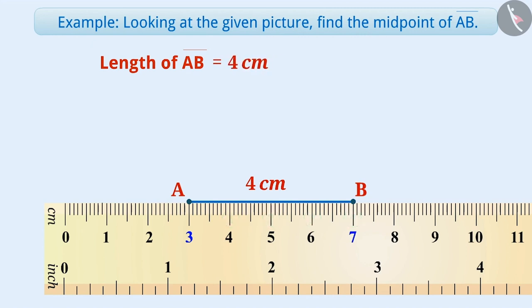This could be done in another way too. Here, point B is at 7 cm and point A is at 3 cm. To find out the distance between two points, we need to subtract 3 cm from 7 cm. The answer obtained will be 4 cm, which is the length of AB.